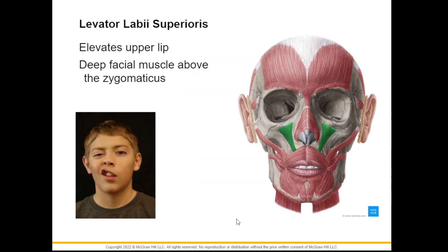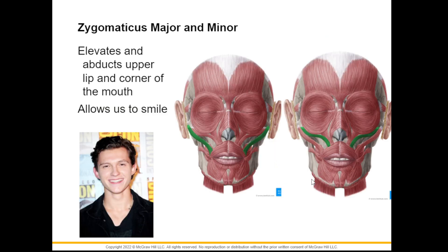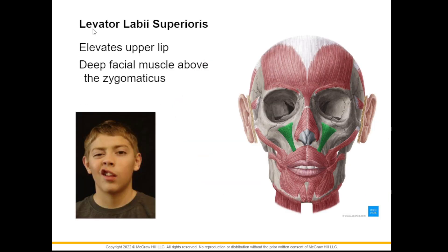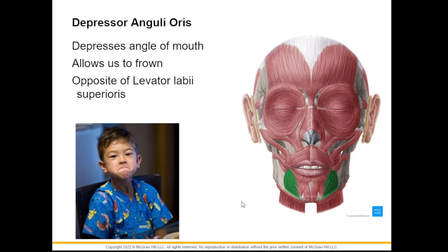We also have the levator labii superioris. This is a deep muscle, so from the name itself — levator — it elevates the lips, or labi, upwards. It elevates the upper lip and it is a deep facial muscle. We also have the depressor anguli oris which, from the name itself, depresses the angle of the mouth. It causes us to frown and it is the opposite of your levator labii superioris.